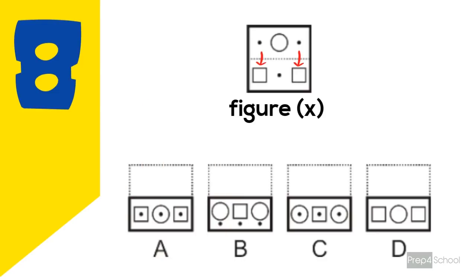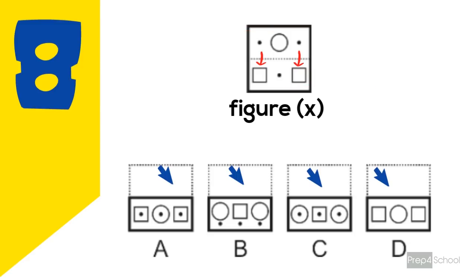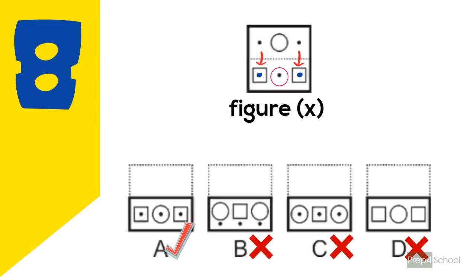Problem eight: it is also folded to its bottom as the dotted line is at the top in all options. The mirror image of the top portion will join with the bottom portion, but these three shapes do not change their position in a mirror image. So the first dot comes in the center of the first square because these three objects are in the same line. All the objects come to the center of the bottom objects. So the correct answer is option A.